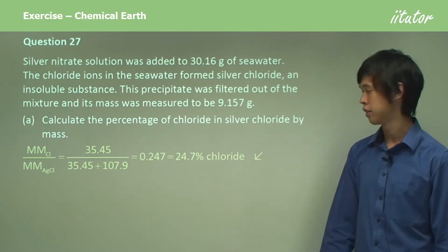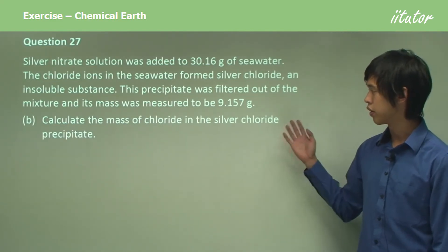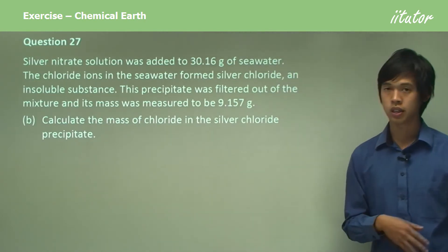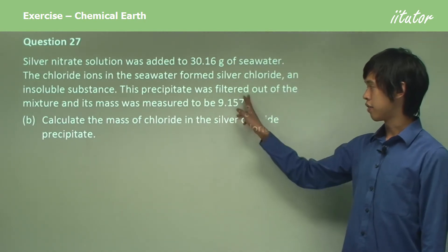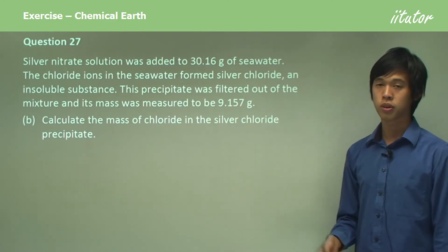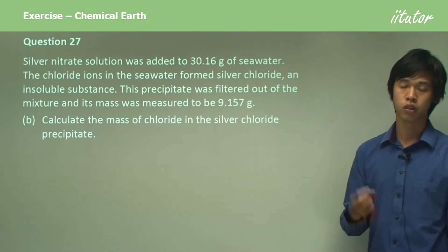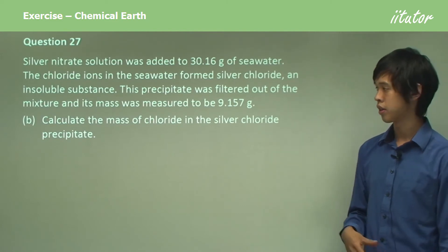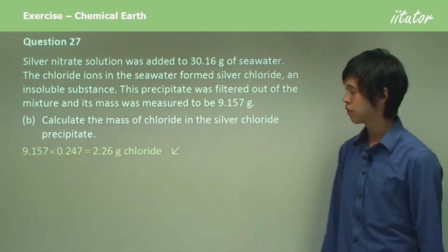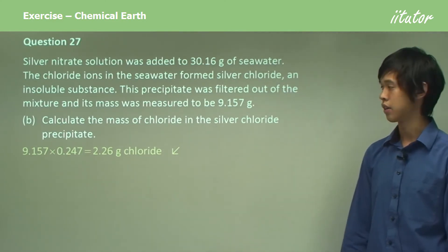Now calculate the mass of chloride in the silver chloride precipitate. We have the mass of silver chloride precipitate, and we know that 24.7% of that will be chloride. So we multiply 9.157 by 0.247, and it gives you 2.26 grams of chloride.